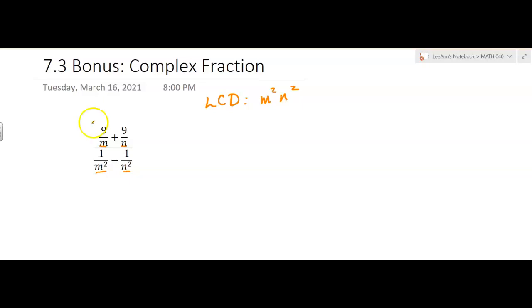So you're going to multiply the numerator by M squared N squared, and you're going to multiply the denominator by M squared N squared. So it's that rule that whatever you multiply in the numerator, you also multiply in the denominator. So that's what we're doing.